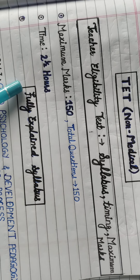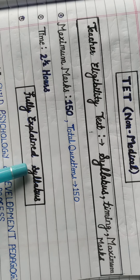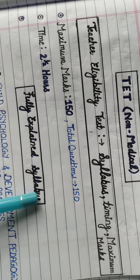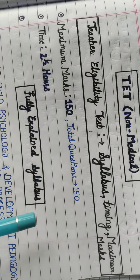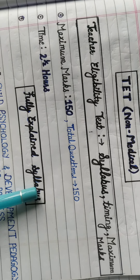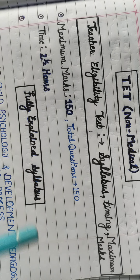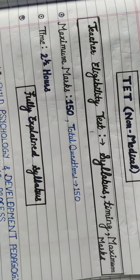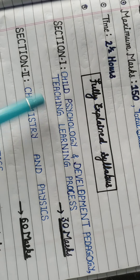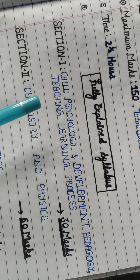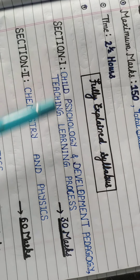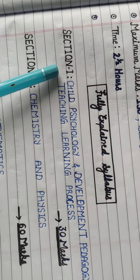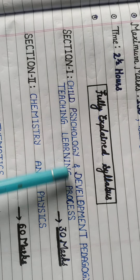Now we will discuss the syllabus — what you need to learn and which sections carry marks. There are a total of four sections. The first section is Psychology and Development, and Pedagogy — the Teaching and Learning Process.